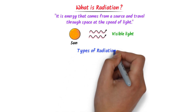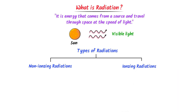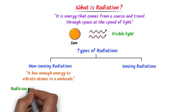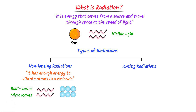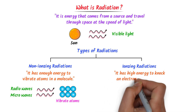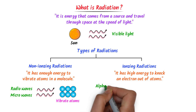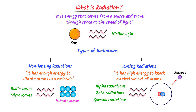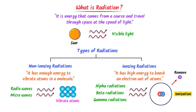There are two types of radiations: non-ionizing radiation and ionizing radiation. Non-ionizing radiation has enough energy to vibrate atoms and molecules — for example, radio waves and microwaves. Ionizing radiation has high energy to knock electrons out of atoms — for example, alpha, beta and gamma radiations. When gamma radiations fall on an atom they can remove an electron, a process called ionization, so they are called ionizing radiation.